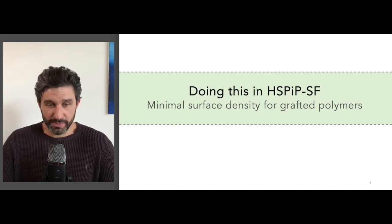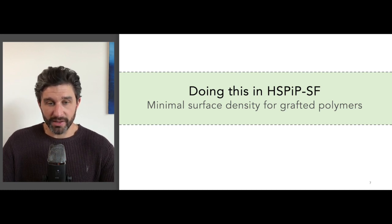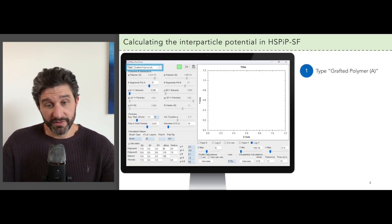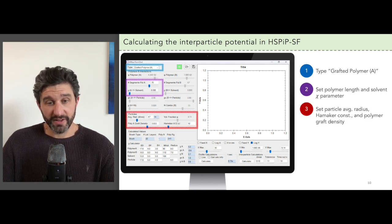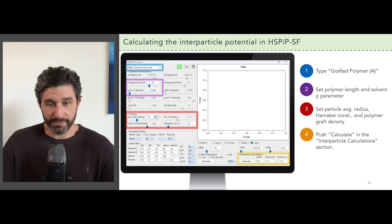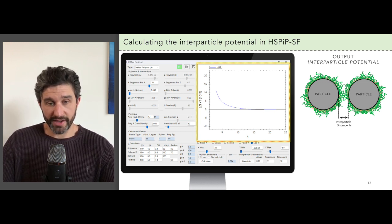Let's walk through how to compute this quantity in HSPIP using grafted polymer dispersants as an example, and we'll use this output to determine the minimum required density of grafted polymers on the particle surfaces in order to mitigate flocculation. The first step is to choose your polymer type — for this example, we choose grafted polymer. The second step is to set the polymer length and the polymer-solvent chi parameter. Next, we set the characteristics and concentration of particles in the dispersion. And finally, we push the calculate button located in the interparticle calculation section at lower right. The result is a plot of the interparticle potential, which adds up both the polymer and the van der Waals contributions plotted versus the distance between the two particles.